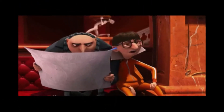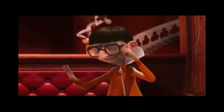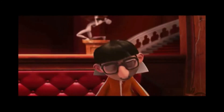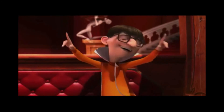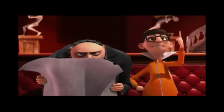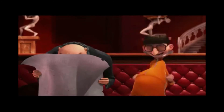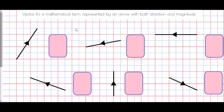For the introduction to today's video, I'm going to pass you over to someone you may recognize. 'I'm applying for a villain loan — go by the name of Vector. It's a mathematical term, a quantity represented by an arrow with both direction and magnitude. Vector! That's me, because I'm committing crimes with both direction and magnitude.' So as Vector himself mentioned, a vector is a mathematical term represented by an arrow with both direction and magnitude.